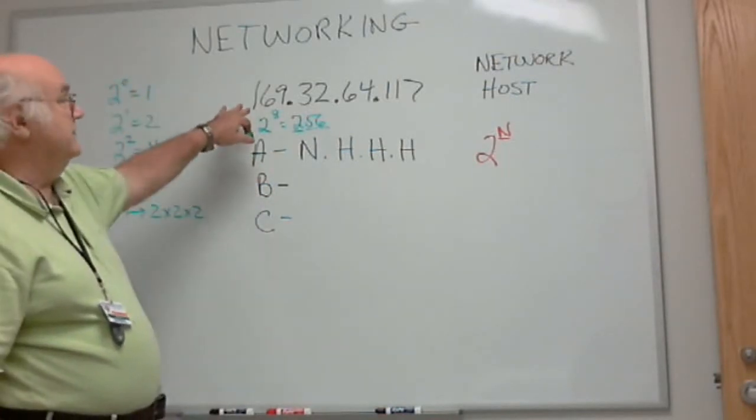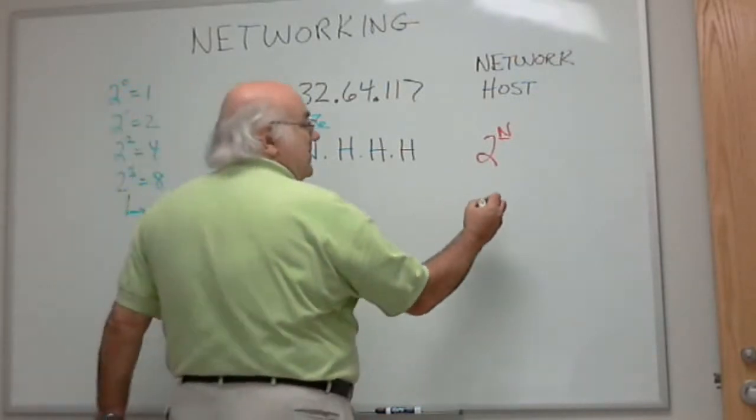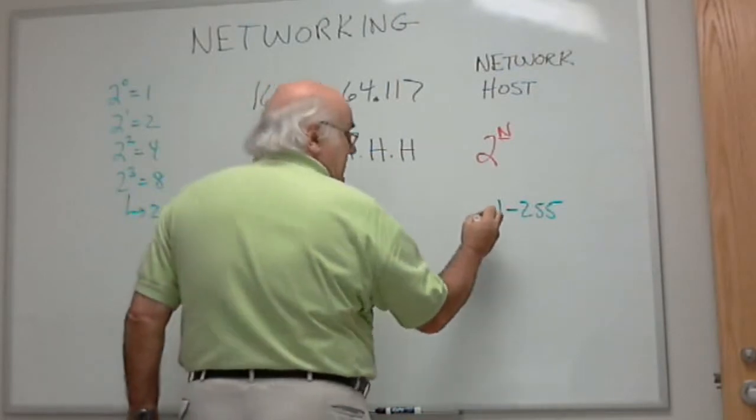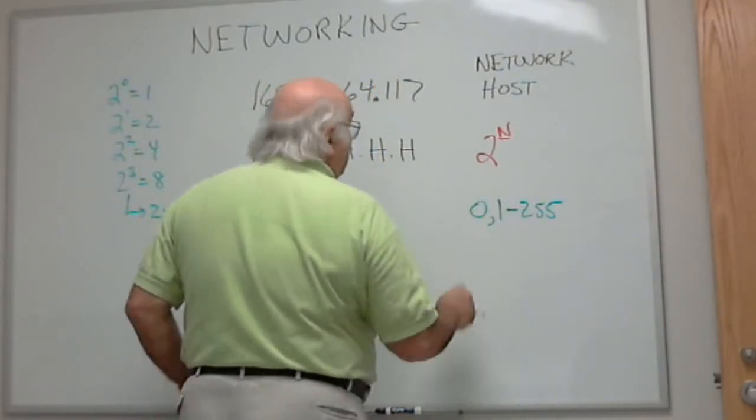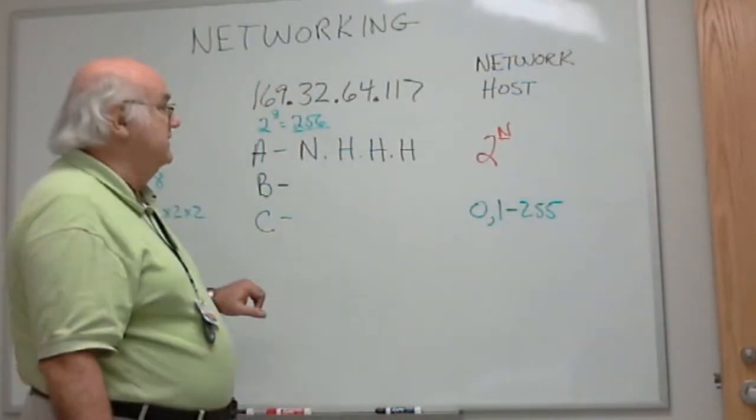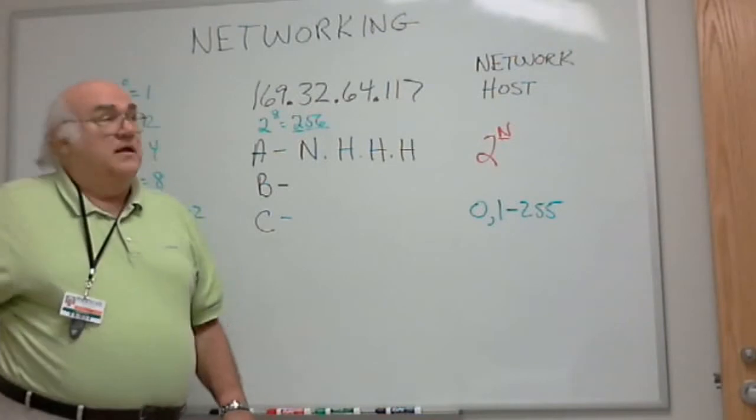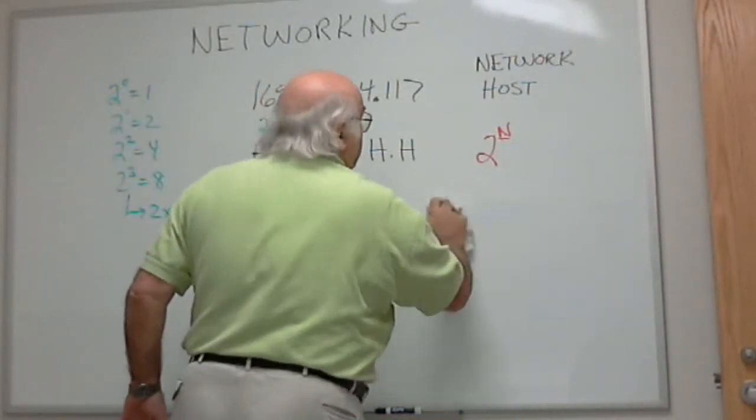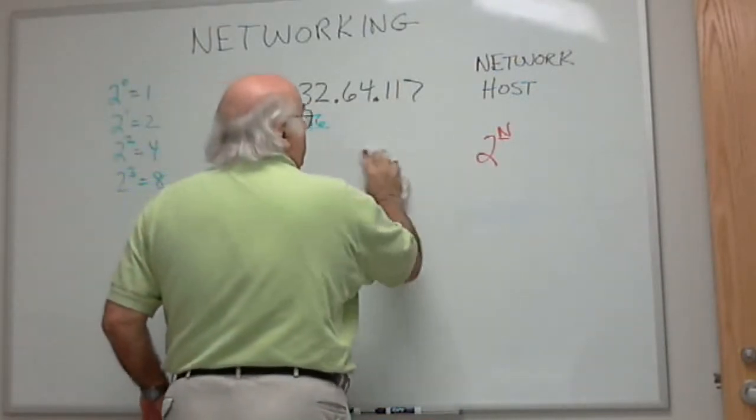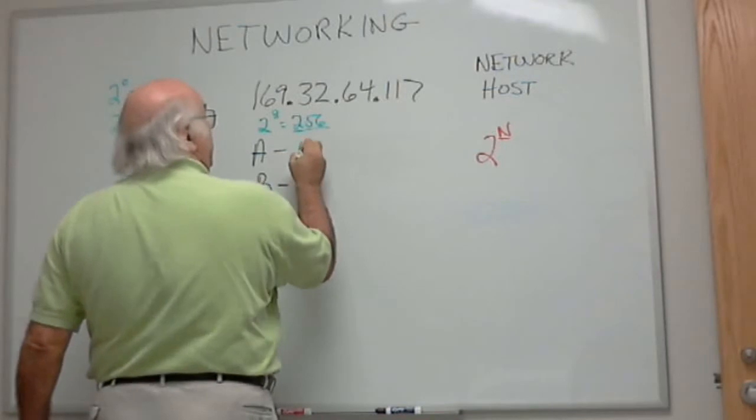Now, you're going to say, wait a minute, you told me the biggest number I could get from a dotted decimal is 255. Well, that's correct. But we're dealing with zero through 255. You must not forget zero. Zero is also a number in that range. So zero through 255 is 256 different numbers. In a class A address, we had the ability to have 256 different numbers for our network portion.